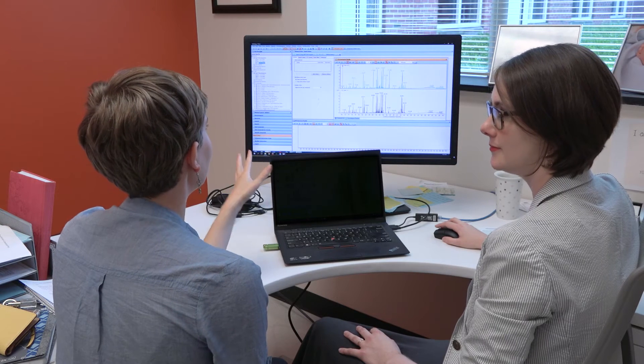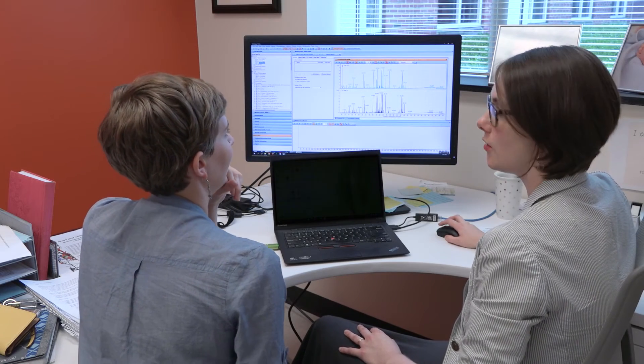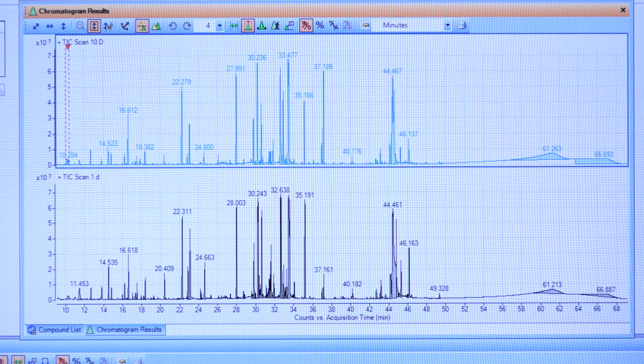All right. So this is the data that the GC-MS will spit out. That's right. Okay. So these are called chromatograms. And what we see here is the separation of the different metabolites that were in our sample mixes.